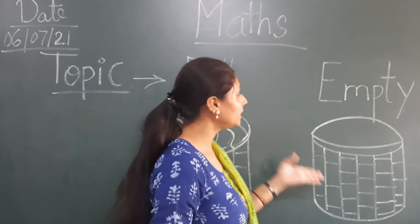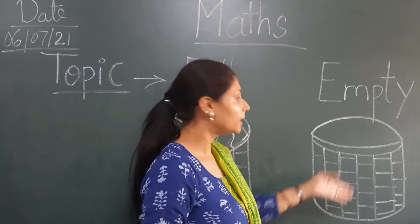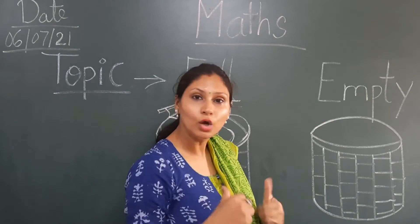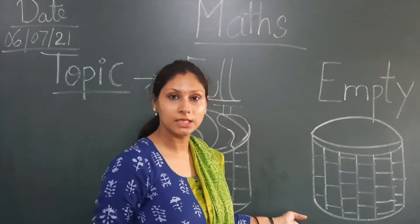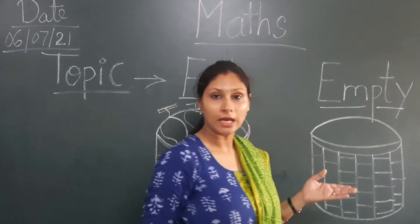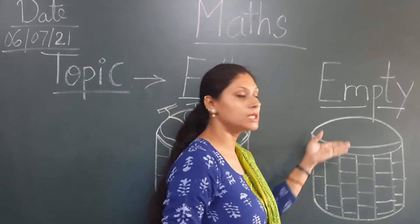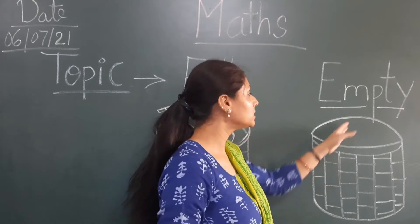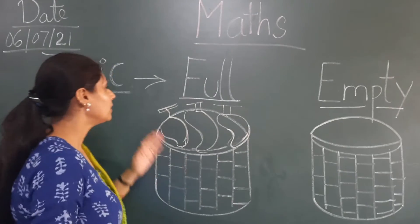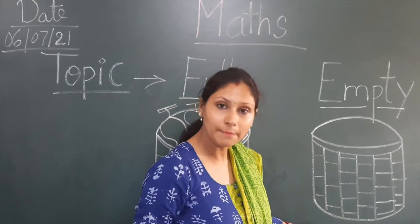Now look at this other basket and tell me — is there any mango? No. Because this basket is empty. There is nothing here. So this basket is full of mangoes and this basket is empty.